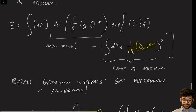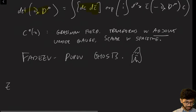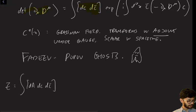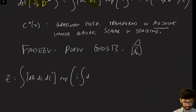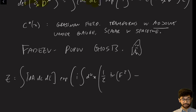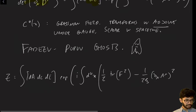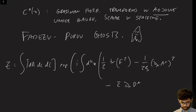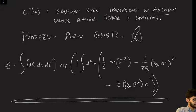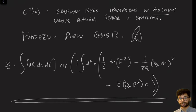Taking this and substituting it in, our path integral now takes the following form: Z is an integral over dA, dC, dC̄, and it's an exponential of i times the integral d⁴x. There's the original non-abelian Yang-Mills action, a new gauge-fixing term (∂_μ A^μ)², and finally a ghost term C̄ ∂_μ D^μ C. This is our new form of the action. We've completely gauge-fixed the action, but the cost is we have to introduce these new mysterious particles called ghosts.